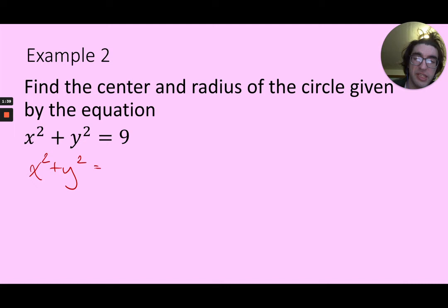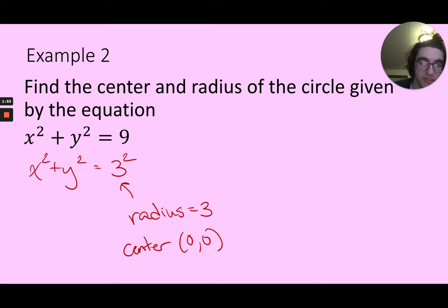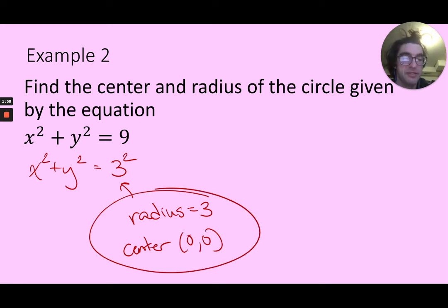So it really is good to think of it, instead of a 9 here, think of that as a 3 squared, because then I have the radius. That's just 3. And my center in this format, x squared plus y squared, is just 0, 0. And there we go. That's the center and radius of that circle.